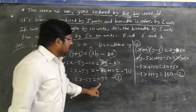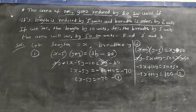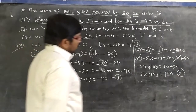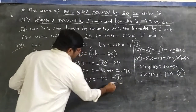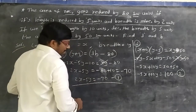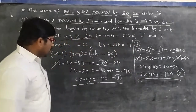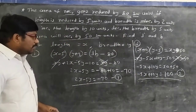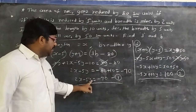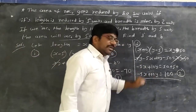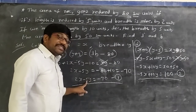Now solving equations 1 and 2. Equation 1: 2x − 5y = −70. Equation 2: −5x + 10y = 100. To eliminate y, multiply equation 1 by 2: 4x − 10y = −140. The y coefficient in equation 1 becomes −10 and in equation 2 is +10, so we add both equations.